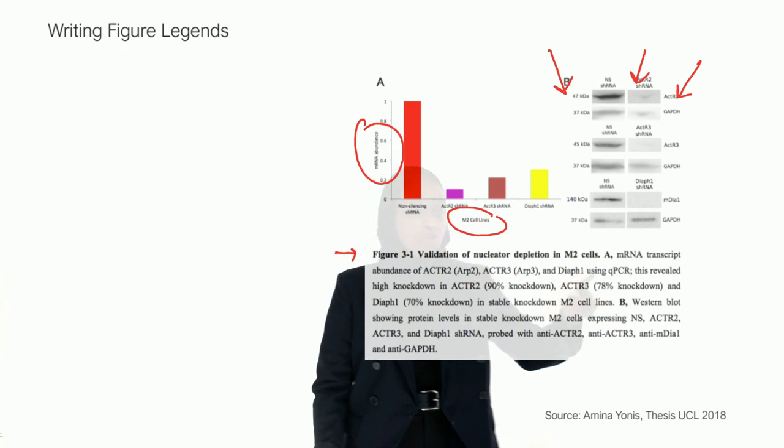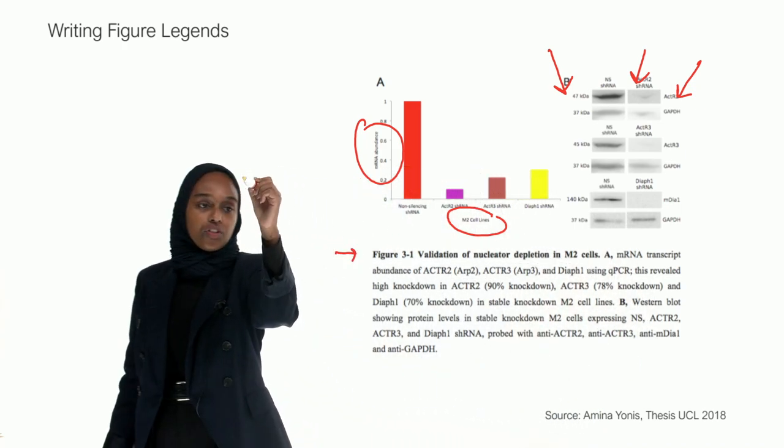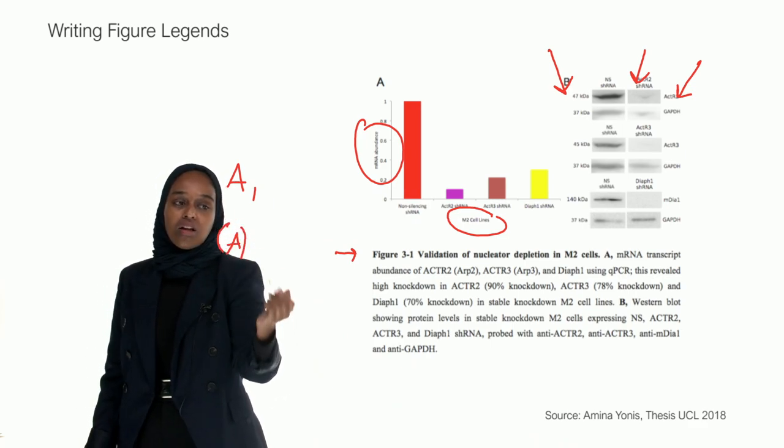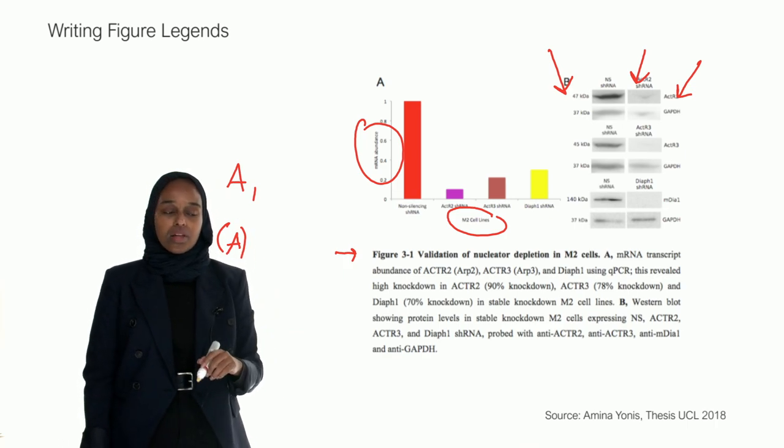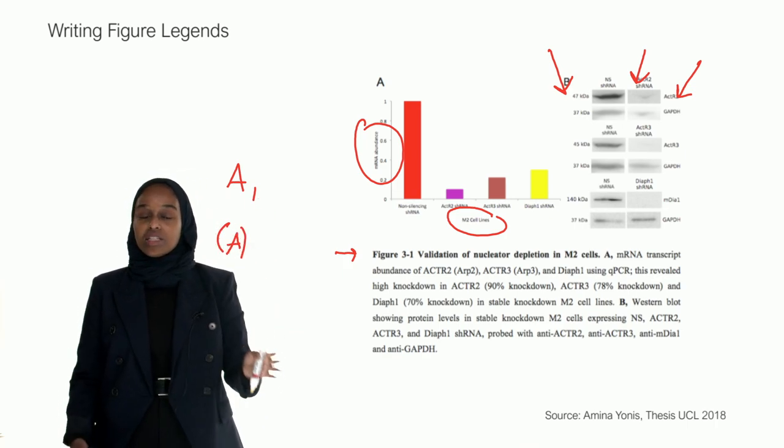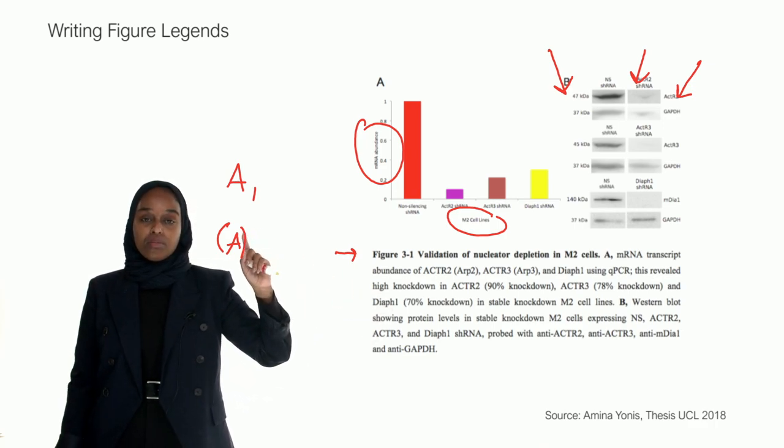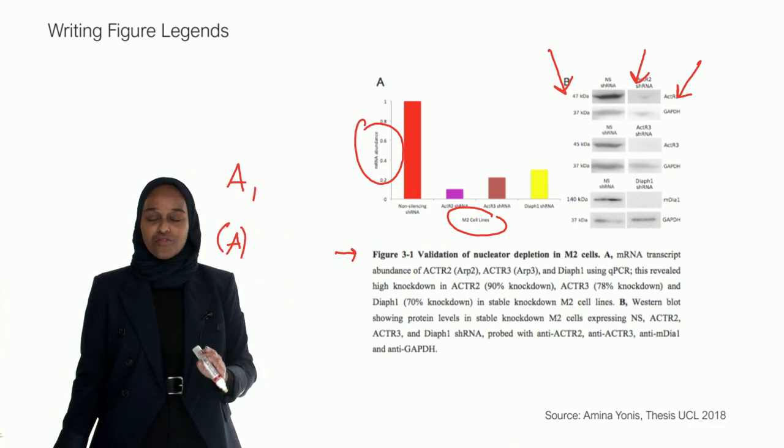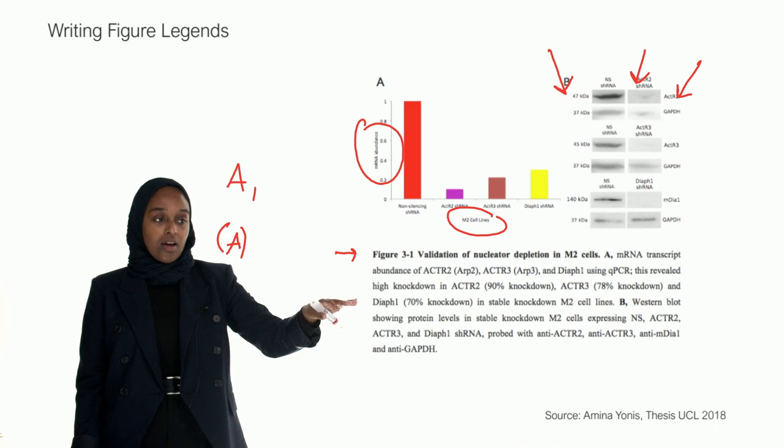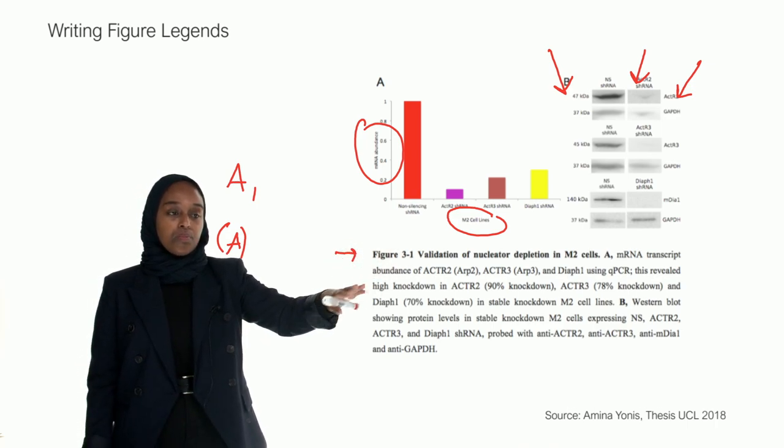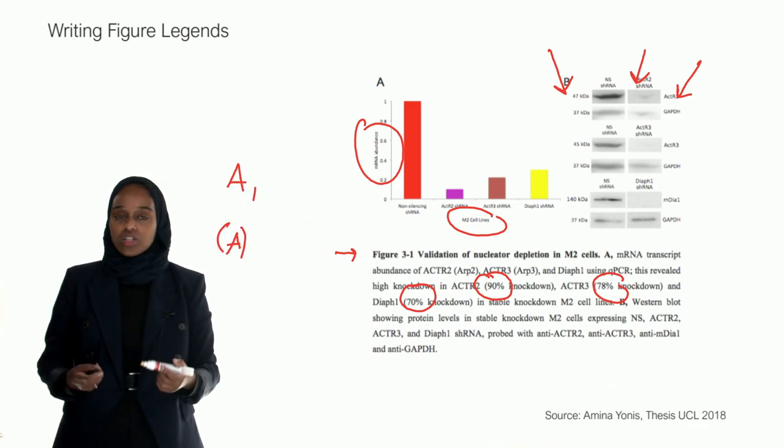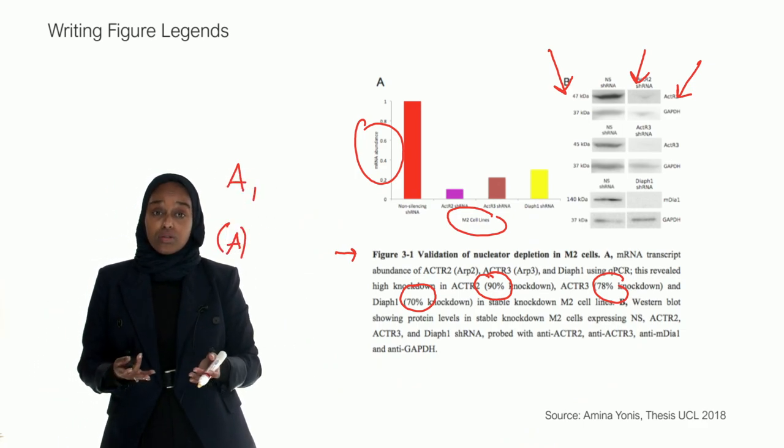And then I've gone into more detail. So you can see that what I've done is you can either use a comma or you can use brackets. It really doesn't matter. Or you can just have it in bold or something. It doesn't really matter. As long as, again, consistency is key. For every single legend in your thesis, you use either this one or that one. Just stay consistent. It really doesn't matter which one you use. So for A, I've said, this is what it is. I've given percentages. So exactly how much it is. Exactly. You want the exact percentages.